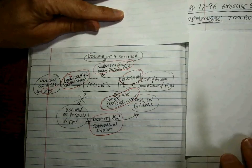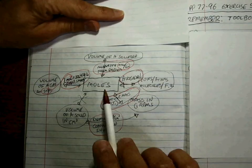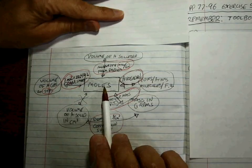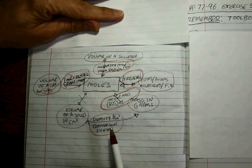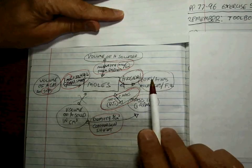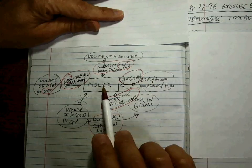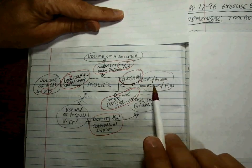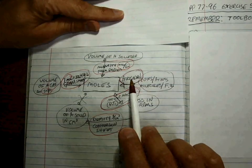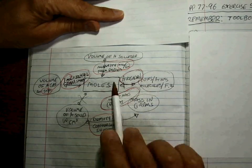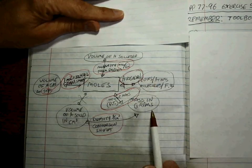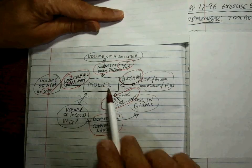Everything has to do with converting from moles. The first thing we learned was if we had moles and we wanted to get to ions, atoms, molecules, or formula units, we would use Avogadro's number to do the conversion. Then we said if we wanted to get between moles and grams, we'd use the molar mass off the periodic table.